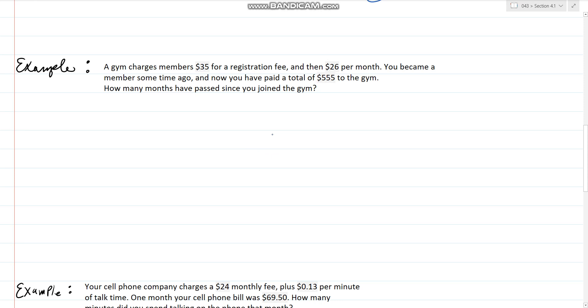A gym charges $35 for a registration fee and then $26 per month. If we became a member a while ago and we paid a total of $555, how many months have passed since we joined the gym? This is pretty clear, it's a line. We have a y-intercept of 35, that base fee of $35. We have a slope of $26 per month. So I can come up with a line: y equals 26t plus 35. You can call it x if you want.